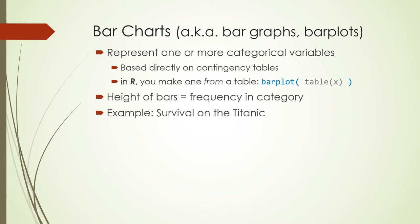The height of each bar is the frequency of observations in a category, so bar charts are just about counting things. That's how you can have a graph of something categorical — graphs have quantitative stuff in them, so you count these non-quantitative categories and kind of create a quantitative thing out of that.